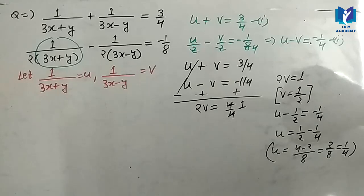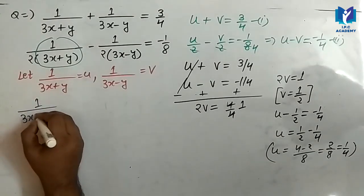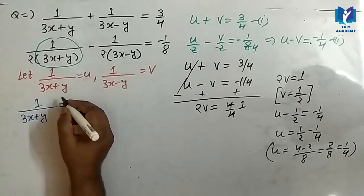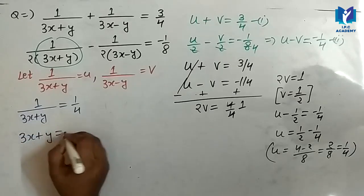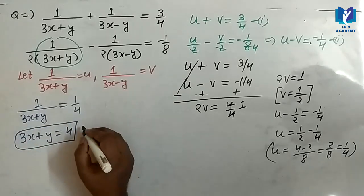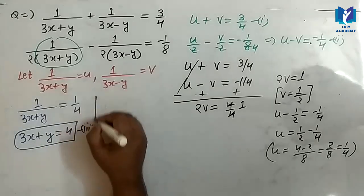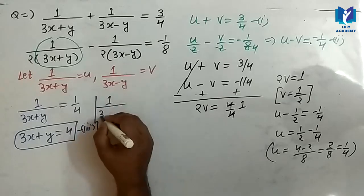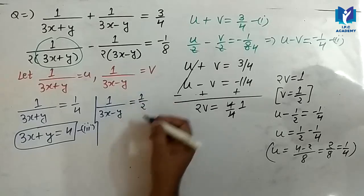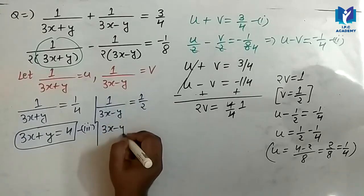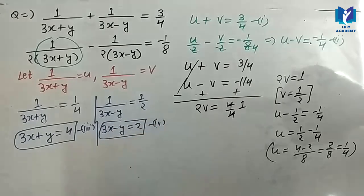So, u और v दोनों की values हम यहाँ पर put करेंगे. So, 1 upon 3x plus y, u की जगह 1 upon 4 रखेंगे. So, आएगा 3x plus y is equal to 4. यह हमारे निकल कराएगी third equation. So, 2nd पर आते हैं, 1 upon 3x minus y, v की जगह जाएगा 1 upon 2. So, here it is 3x minus y is equal to 2. यह आएगी हमारी 4th equation.